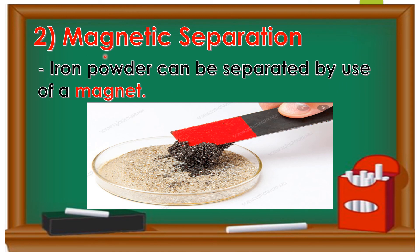The second method of separating substances is magnetic separation. An iron powder can be separated from sand by using a magnet, as we can see here with the iron powder and sand mixture.